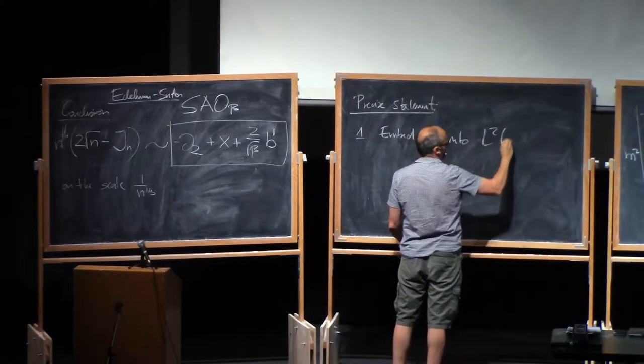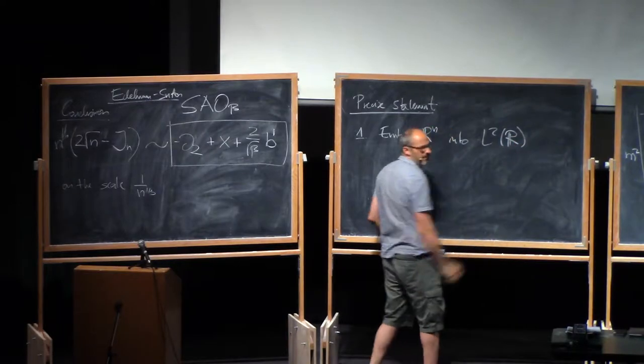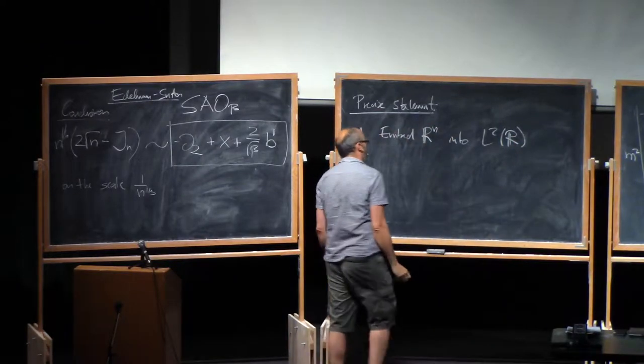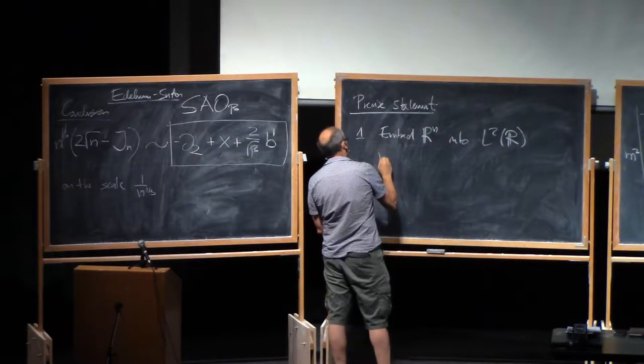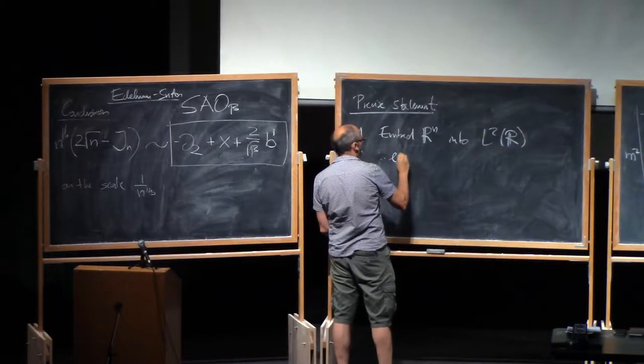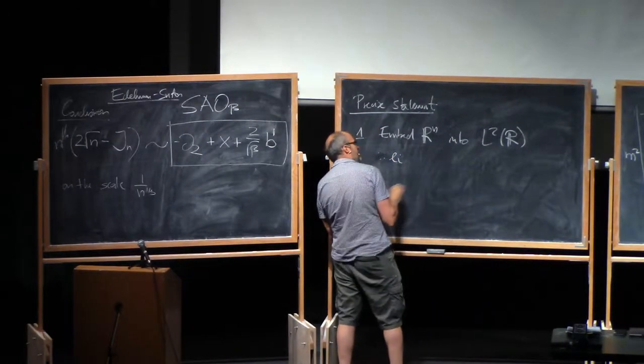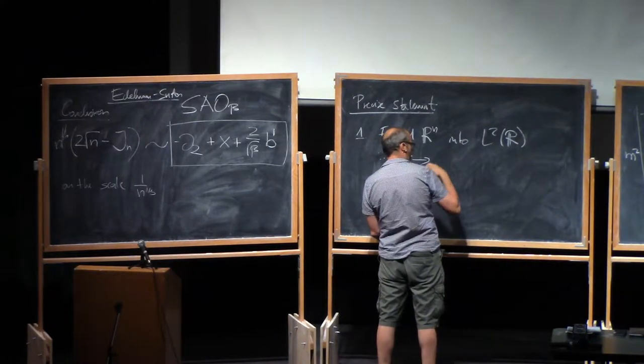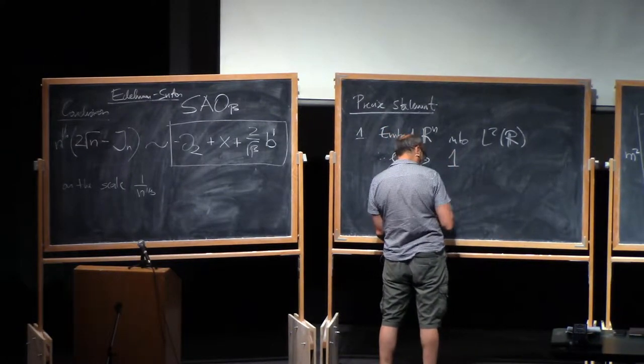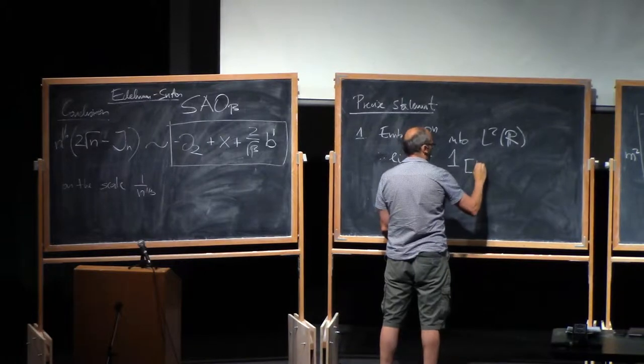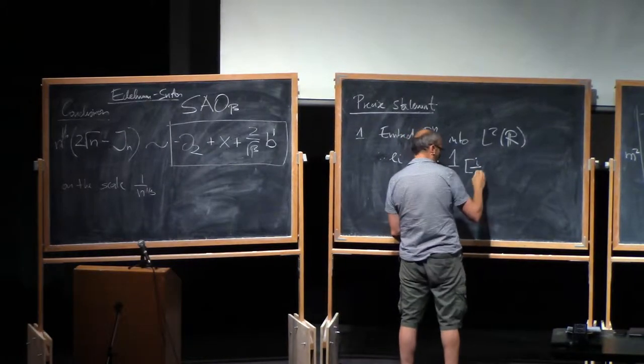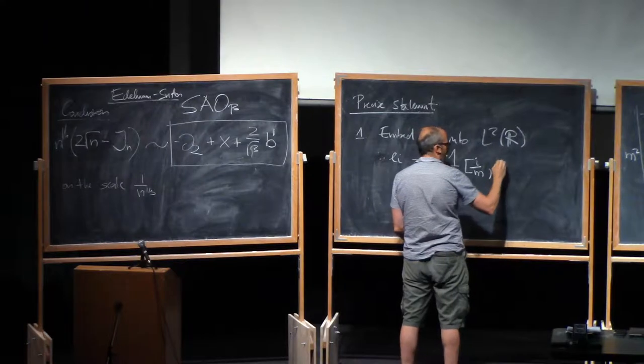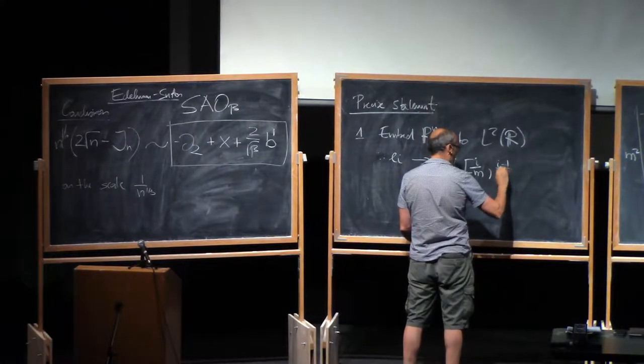into, let's say, L2 of R, with piecewise linear functions, so with ei, the i-th coordinate goes to the indicator function of the interval i over m, so m is n to the one-third, and say i minus one over m.